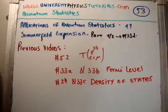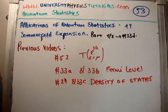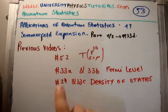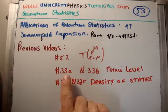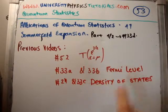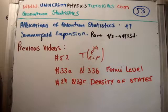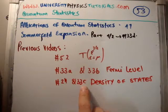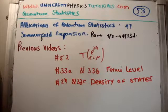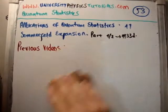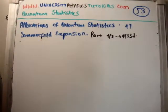In order to understand what's happening in this video, you need to look at number 52, where the Taylor expansion of epsilon to the 3/2, centred around epsilon equal to the chemical potential, is done. Number 33A is the video I made recently; the duplicate of this is 33B, and this is on the Fermi level and calculating the density of states in terms of the Fermi level. Number 23C is a duplicate of 24 on the density of states.